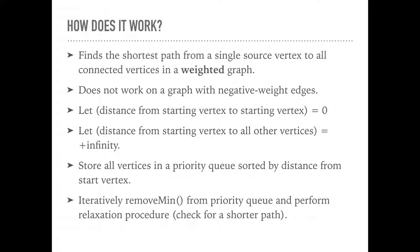So very quickly, Dijkstra's finds the shortest path from one single source vertex to all connected vertices in a weighted graph. It does not work on a graph with negative weight edges. If you want to know why, then look at the Bellman-Ford video on this channel where we compare Bellman-Ford to Dijkstra's and we show why Bellman-Ford does work with negative weight edges and why Dijkstra's does not for many cases.